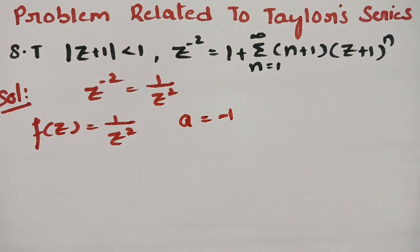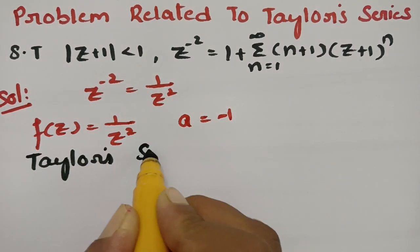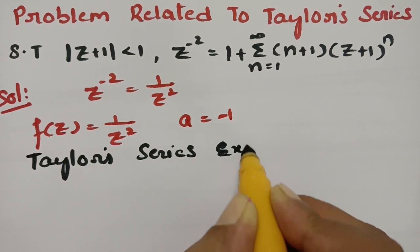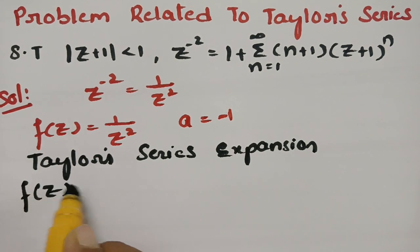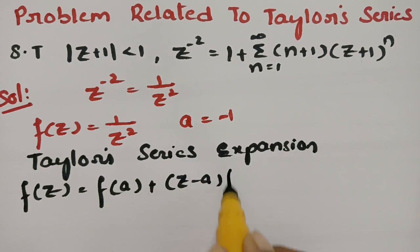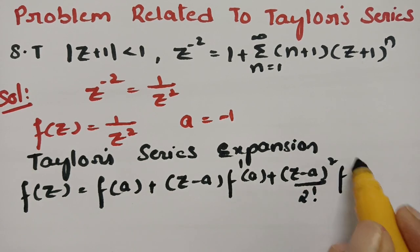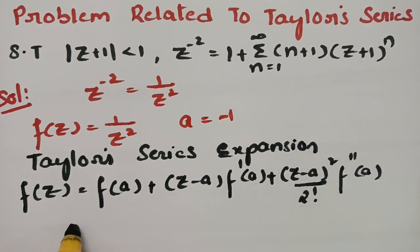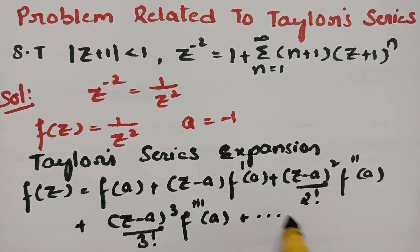According to the Taylor series expansion, we have f(z) equal to f(a) plus (z minus a) times f'(a) plus (z minus a)² divided by 2 factorial times f''(a), plus (z minus a)³ divided by 3 factorial times f'''(a), plus and so on.